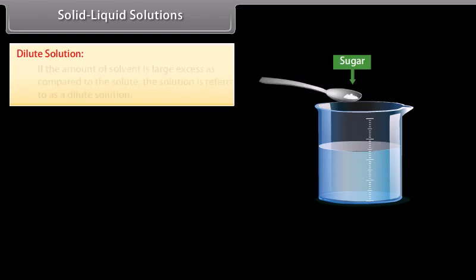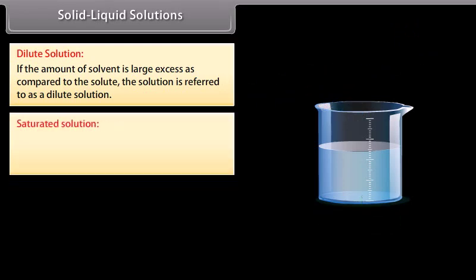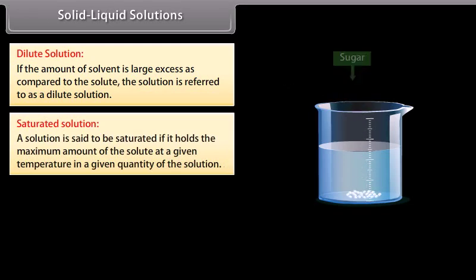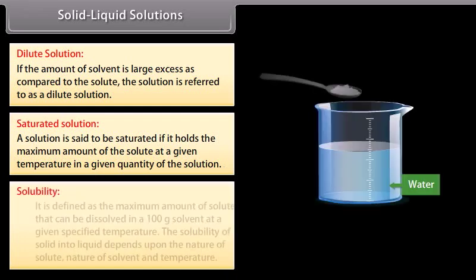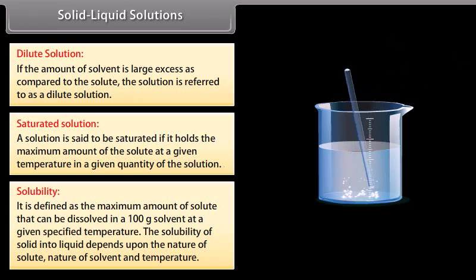Solid-liquid solutions: A small amount of solute is dissolved in a large quantity of solvent — dilute solution. If the amount of solvent is large excess as compared to the solute, the solution is referred to as a dilute solution. A solution is said to be saturated if it holds the maximum amount of the solute at a given temperature in a given quantity of the solution. Solubility is defined as the maximum amount of solute that can be dissolved in 100 grams of solvent at a given specified temperature. The solubility of solid into liquid depends upon the nature of solute, nature of solvent, and temperature.